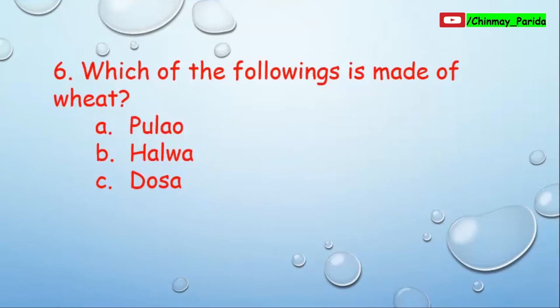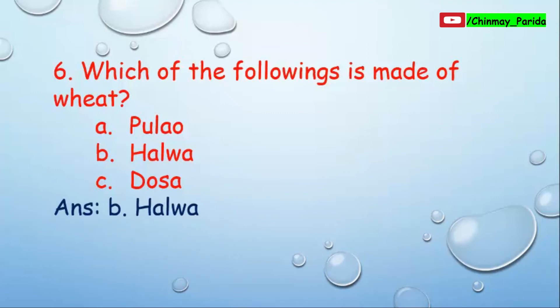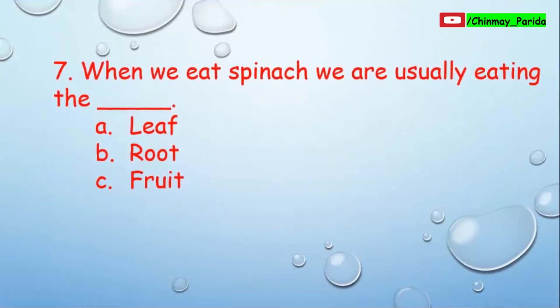Question number six: Which of the following is made of wheat? Option A: pulao, option B: halwa, option C: dosa. Pulao is made of rice, and dosa is also made of rice. But halwa is made of rava, and rava is made of wheat. So option B, halwa, is the correct answer.